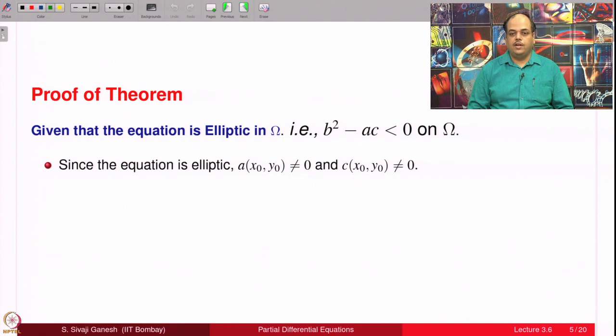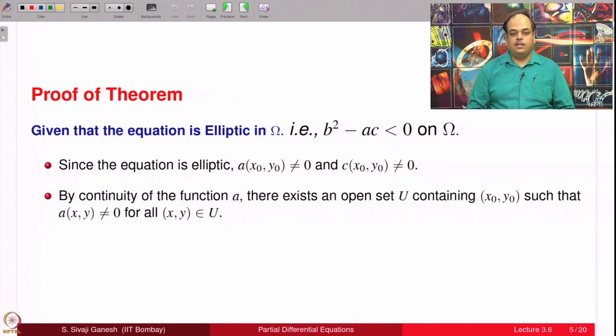Neither a nor c can be 0 at any point in omega, in particular at (x_0, y_0). We are assuming they are real analytic, definitely continuous. By continuity of the function a, the function a will be non-zero in some open set U which contains (x_0, y_0).